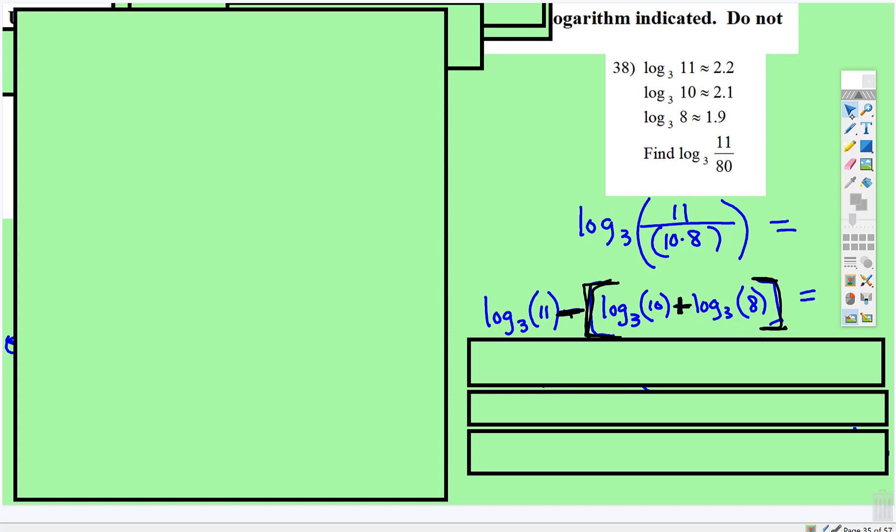And now we have everything we need. Log base 3 of 11 is 2.2, subtract, that's going to be in parentheses, log base 3 of 10 is 2.1, plus log base 3 of 8 is 1.9.